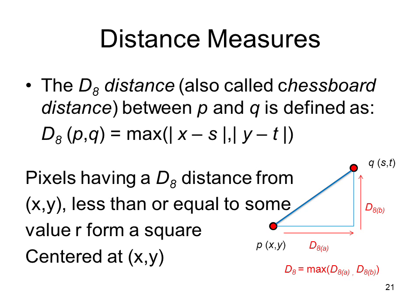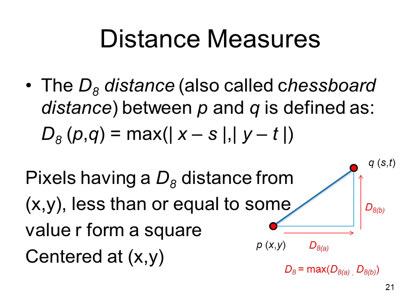If an image is given, then we can always find Nᴅ(4) and Nₚ(4), which together form 8-neighborhood. We can also determine connectivity of pixels and calculate distance measures, which is an important parameter in classification. Connectivity is prominently used in establishing boundary concepts in digital image processing.